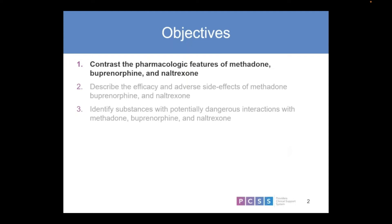In this particular module, we're going to go through a few things around the pharmacology of these medications that are typically used and the only ones approved for medication-assisted treatment of opiate use problems. We're going to look at them contrasting the pharmacologic features of methadone, buprenorphine, and naltrexone. We'll describe the efficacy of these various products and identify substances that potentially could have dangerous interactions.